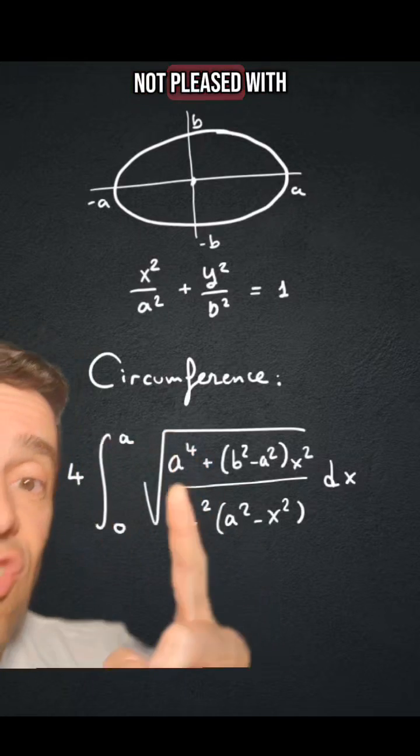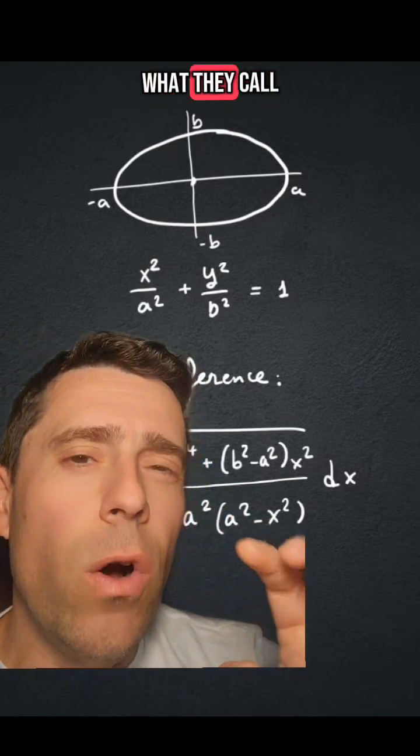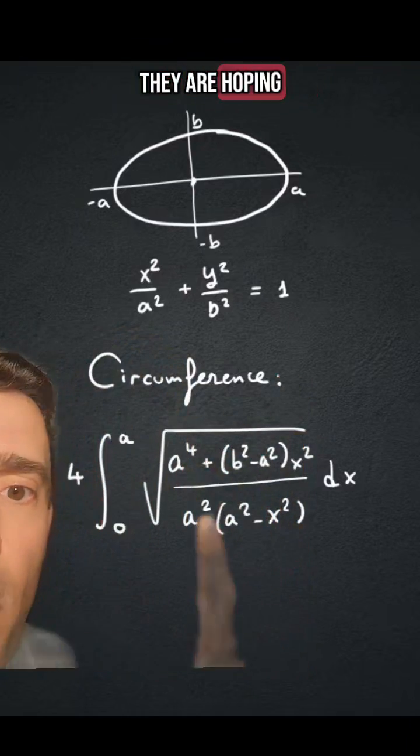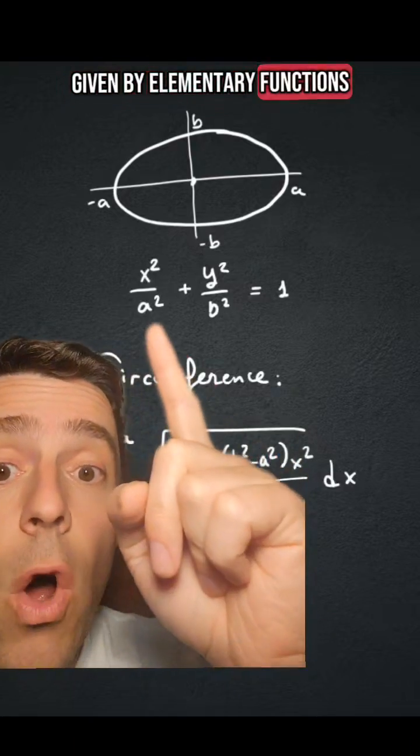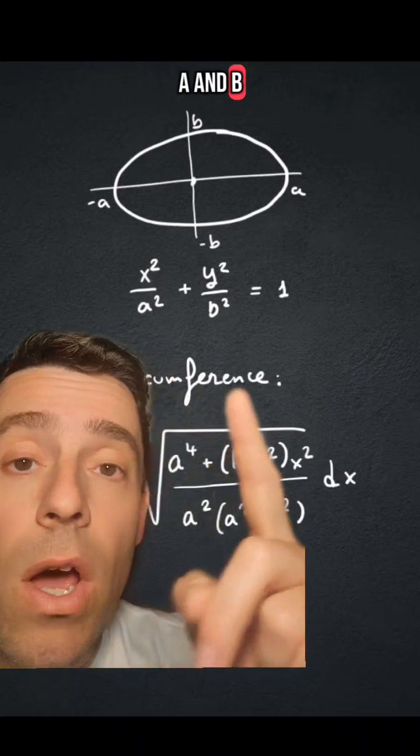Some people are not pleased with such a formula because it's not what they call a closed-form formula. They are hoping for a formula that is just given by elementary functions on the invariants a and b of the ellipse.